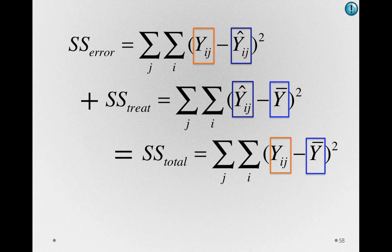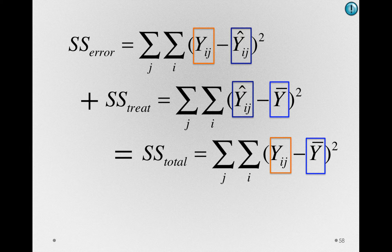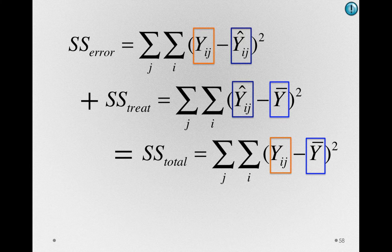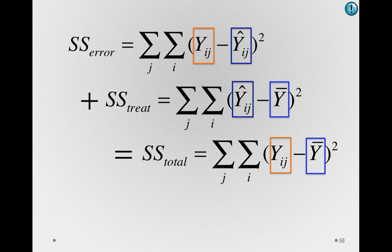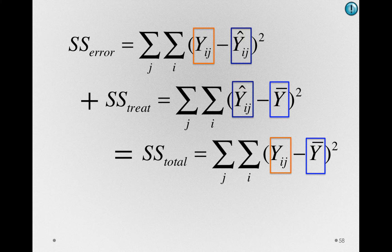The sums of squares of error, that is the sums of squares within each group of each individual versus the mean for each group, and the sums of squares for treatment, that is the deviations between the predicted score for each individual and the grand mean.